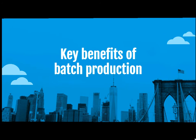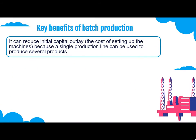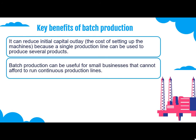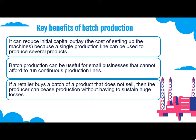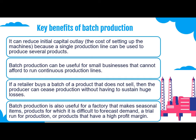Now we will see the key benefits of batch production. It can reduce initial capital outlay — the cost of setting up machinery — because a single production line can be used to produce several products in batches. It is useful for small businesses that cannot afford to run continuous production lines. If a retailer buys a batch that does not sell, the producer can cease production without sustaining huge losses. It is also useful for factories that make seasonal products for which it is difficult to forecast demand, and trial runs with high profit margins can be produced through batch production.